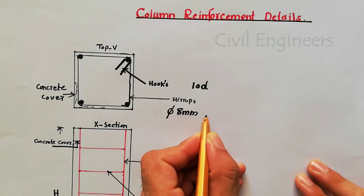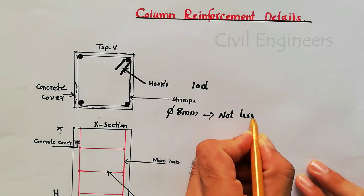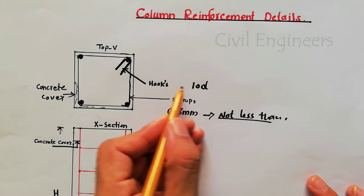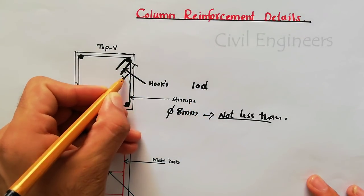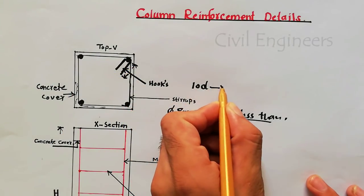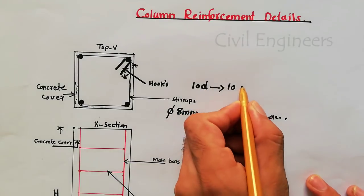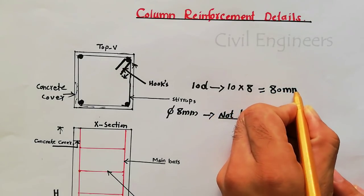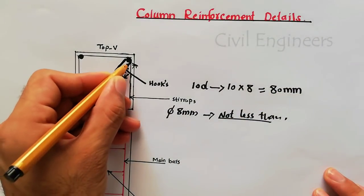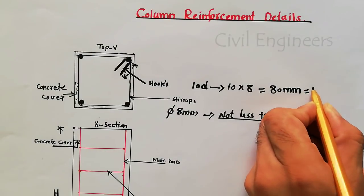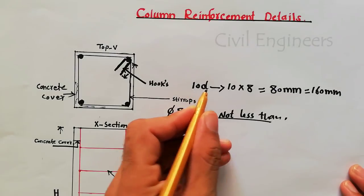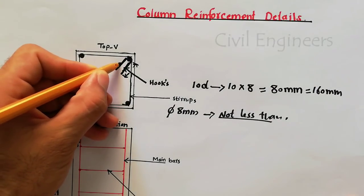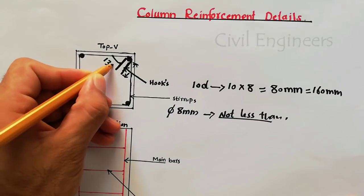The stirrup diameter should not be less than 8 mm. The hook length is calculated as 10d — 10 as a number and d as the stirrup diameter. For an 8 mm stirrup, that gives 80 mm per hook, so both hooks together give 160 mm total. Also, this hook angle should not be less than or more than 135 degrees.